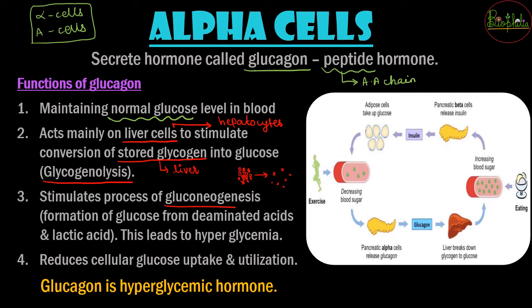After this, glucagon also functions for the process of gluconeogenesis. Breaking the word down: 'glucose' plus 'neo' (new) plus 'genesis' (formation) — so there is formation of glucose from new sources. New sources can be amino acids, proteins, or fats. These are sources that do not directly give glucose but are used to produce glucose.